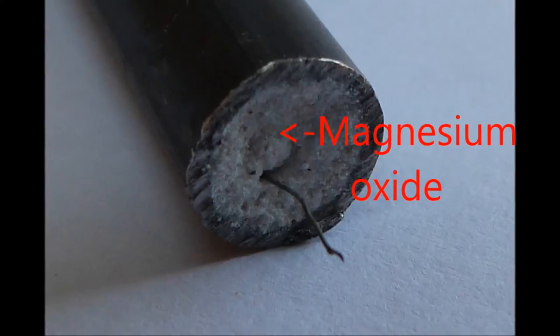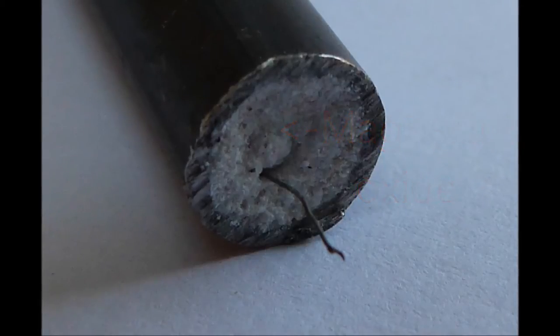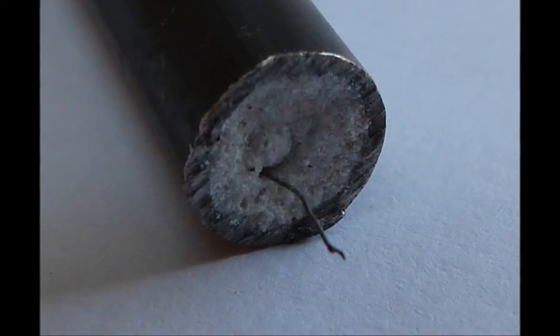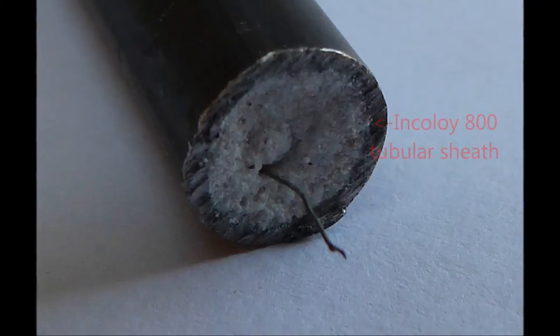This serves to hold the wire centrally within the tube, to insulate the electrical current, and also to evenly conduct the heat generated outward towards the sheath.